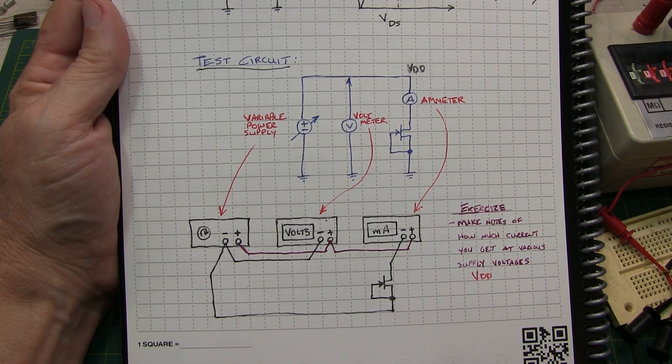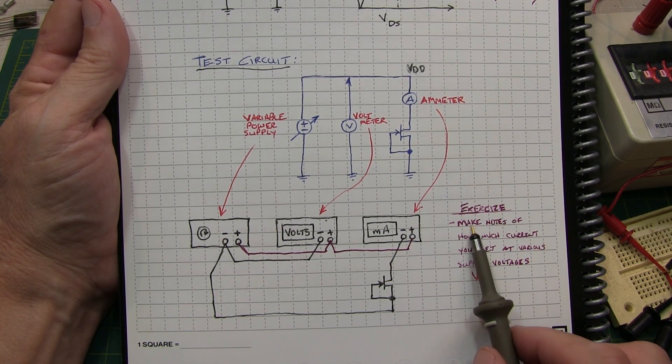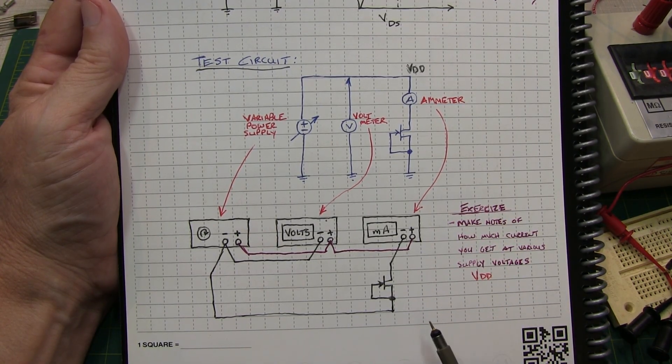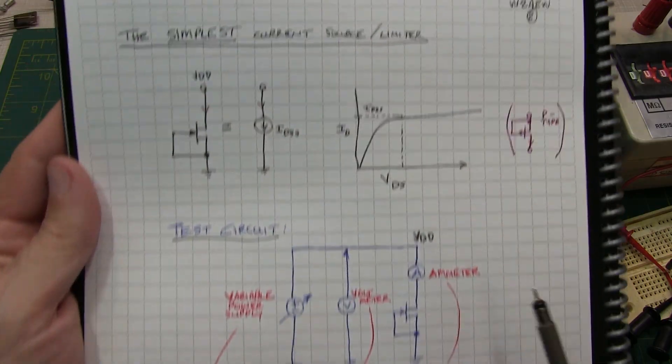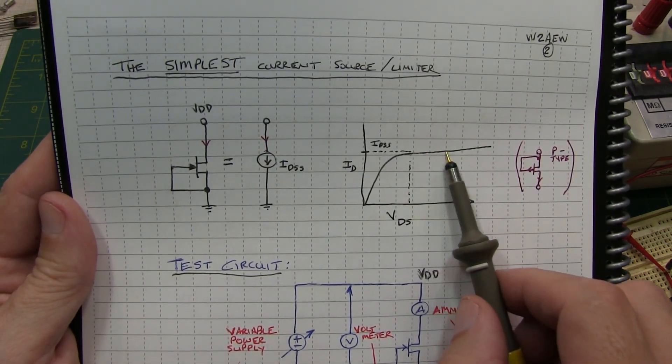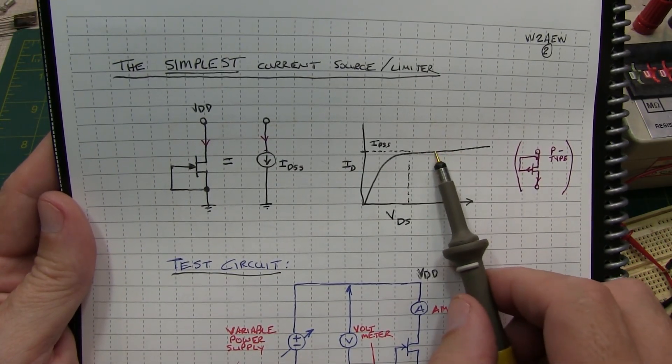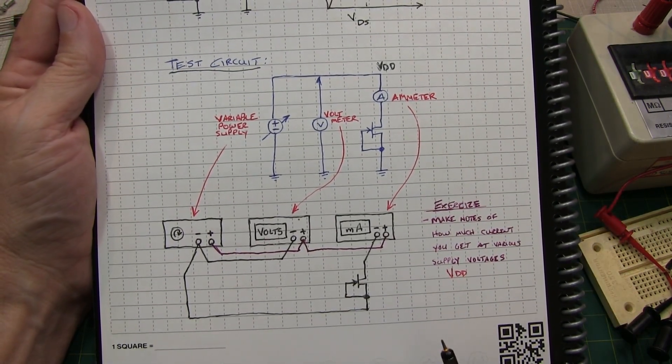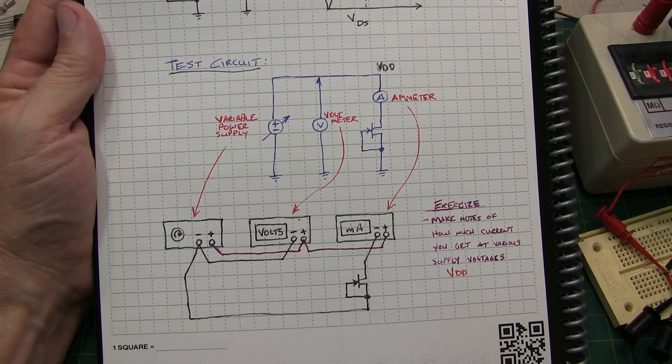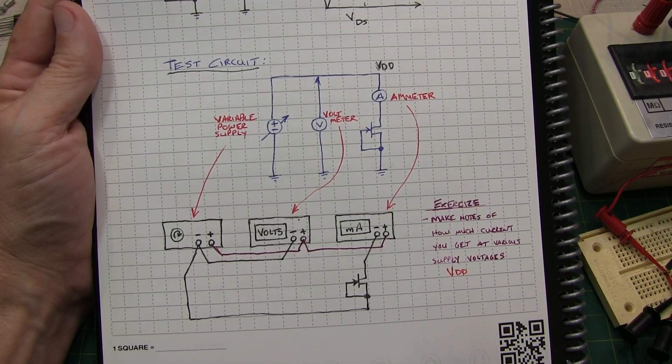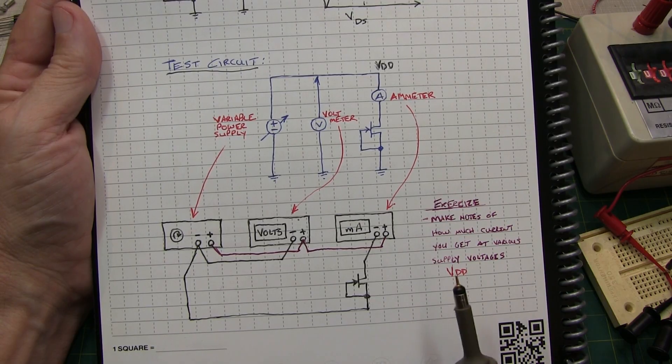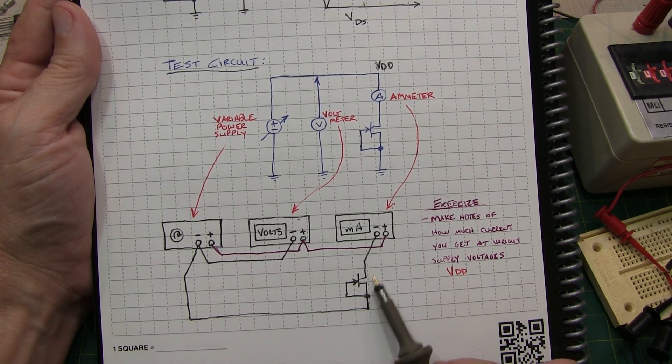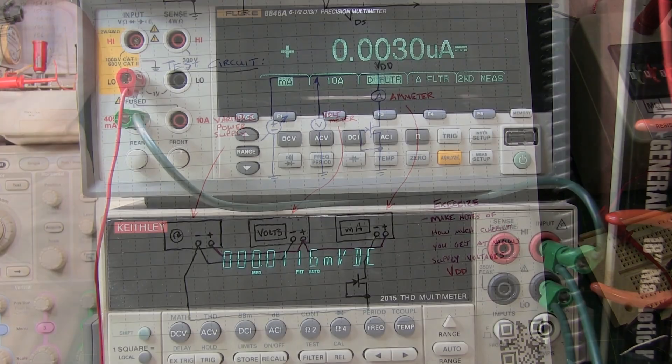Now the exercise that you can follow along at home here is make notes of how much current you get at various supply voltages. Particularly when you get up past this knee, how much of a change in current do you get for changes in supply voltage, to see how good of a current source it is. It's also a measure of how good the output impedance is. Again, a current source you want a very high output impedance, meaning you don't want a current change as the voltage across that device changes.